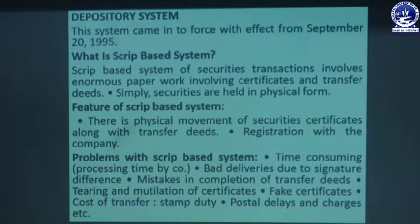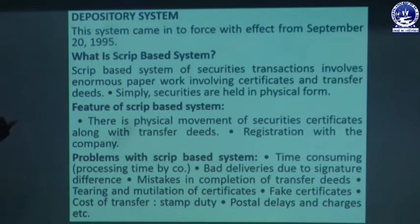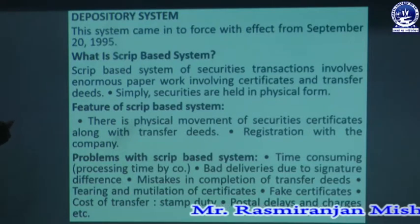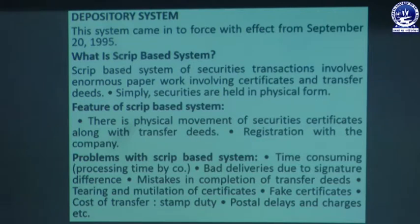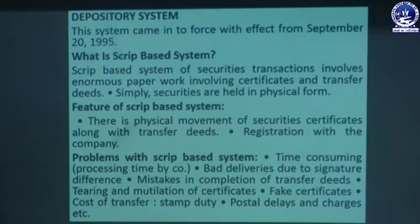Another demerit is mistakes in completion of transfer deeds — in a script-based system, at the time of transferring securities from issuer to investor, there may be mistakes in completing the transfer deeds. Then there is tearing and mutilation of certificates, also the scope for fake certificates — a company may generate fake certificates. The cost is also higher relating to stamp duty, delivery charges, and other expenses. The last demerit is postal delay and charges — when securities are held in physical form, the company transfers the physical certificate through post, causing delay and additional postal charges.